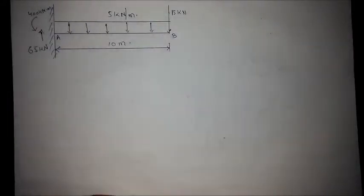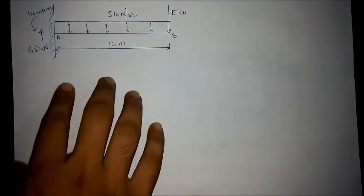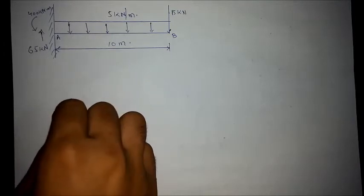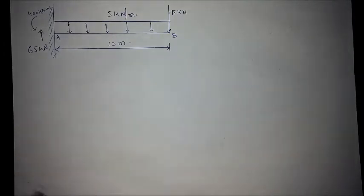This is the fourth example of shear force and bending moment diagram. We are required to draw the shear force and bending moment diagram of a cantilevered beam which is subjected to a uniformly distributed load and a point load of 15 kilonewtons.